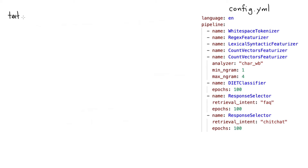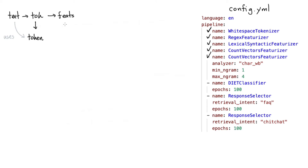Text comes in and is picked up by a tokenizer — in this case, a whitespace tokenizer. This pipeline step adds tokens that are available to any other components that follow. Next in the pipeline, we have lots of components that will add sparse features, things like count vectorizers and lexical syntax features — I'll call that a featurization step. What comes out of this is just some sparse features, and just like before, the current component uses what the previous step produced, because these sparse features use the tokens.